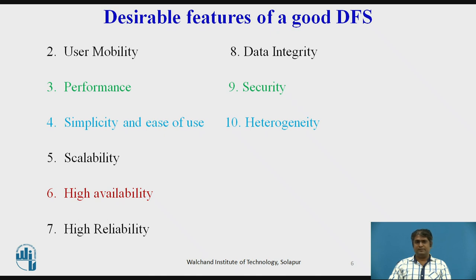Scalability: distributed systems will grow over time by adding new machines or interconnecting networks. Therefore, a good distributed file system should be designed to easily cope with growth in nodes and users. High availability: a distributed file system should continue to function even when partial failures occur due to one or more components, such as communication link failure, machine failure, or storage device crash. When a partial failure occurs, the system may show degradation in performance, functionality, or both. High availability and scalability are mutually related properties.